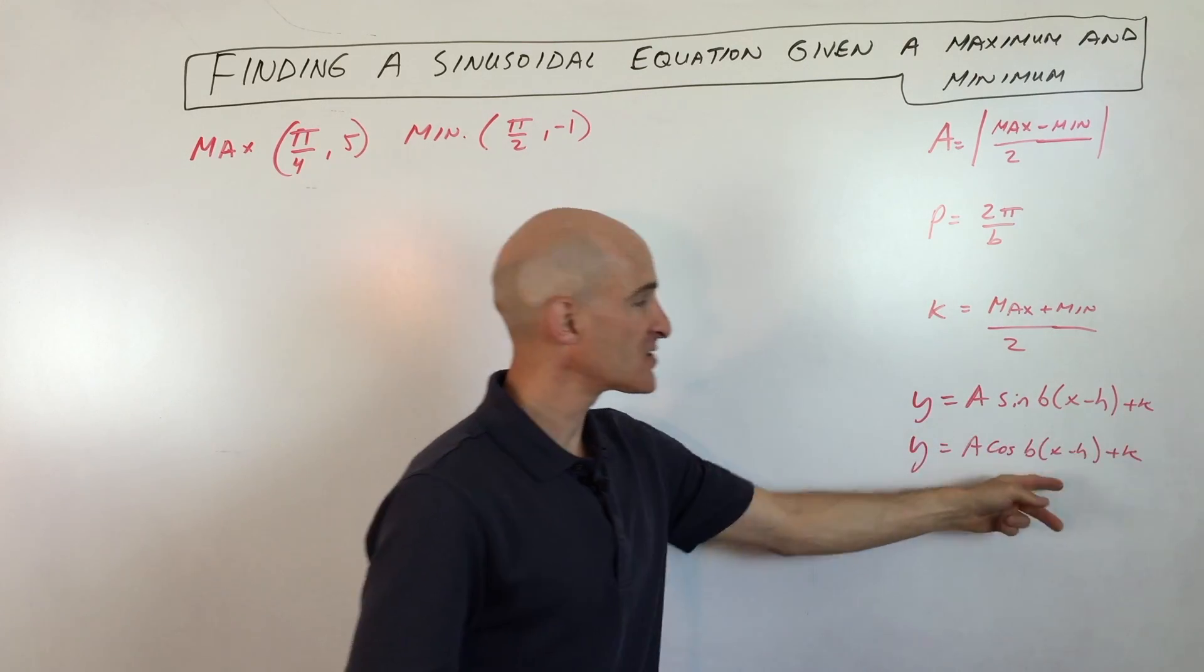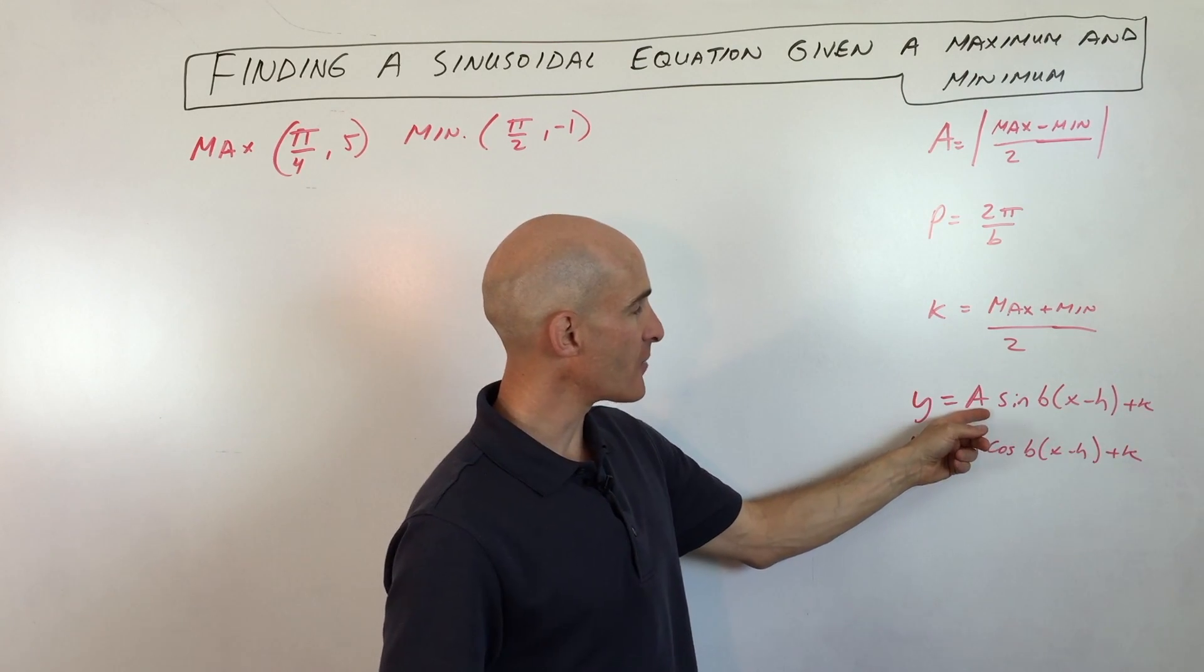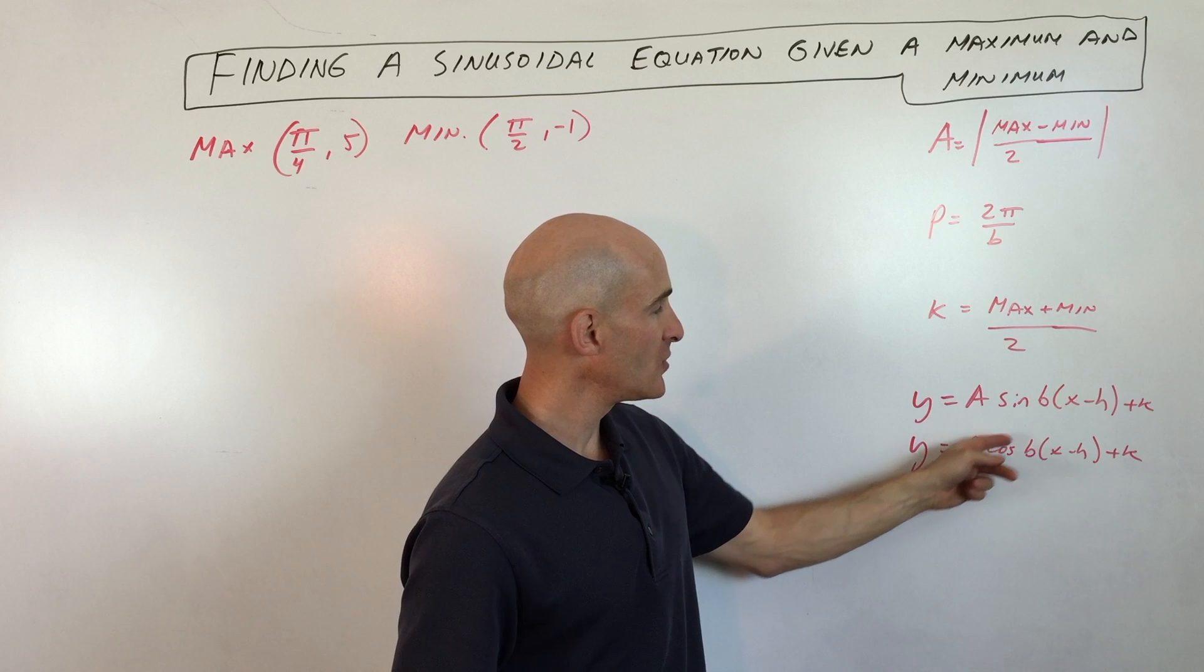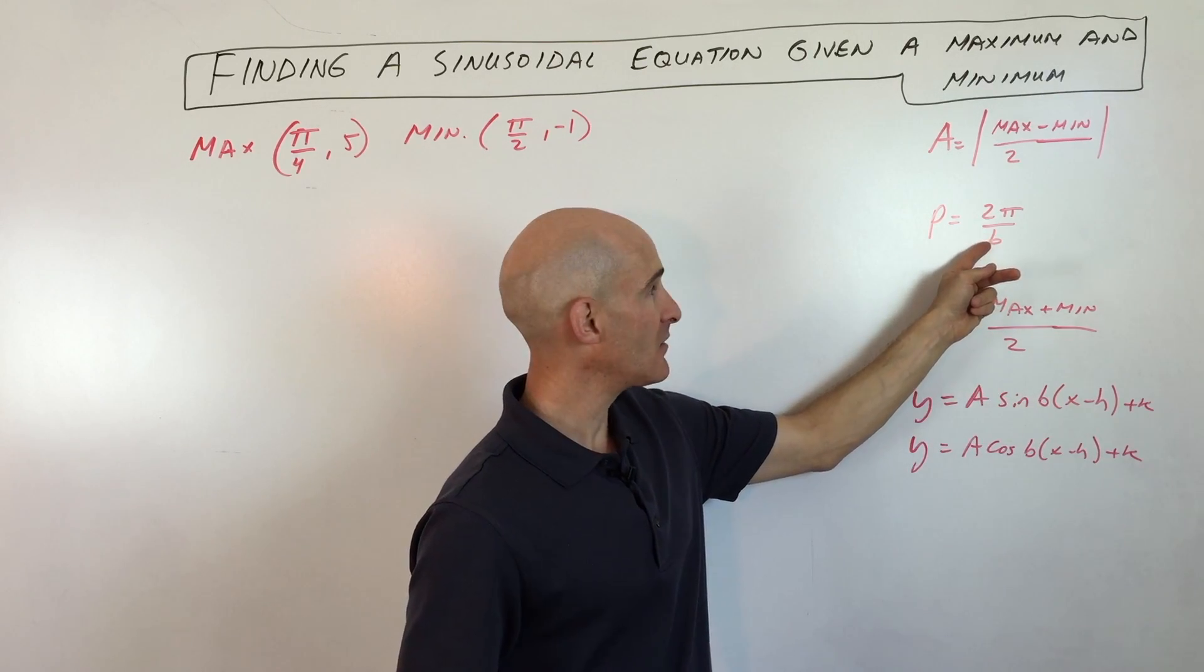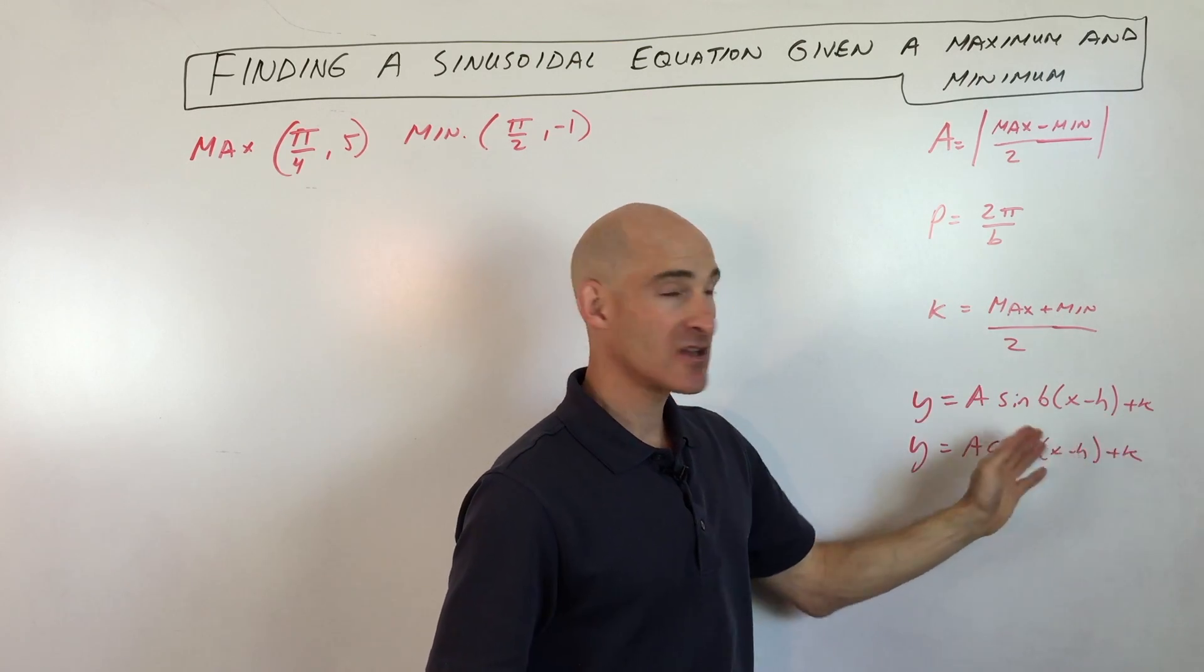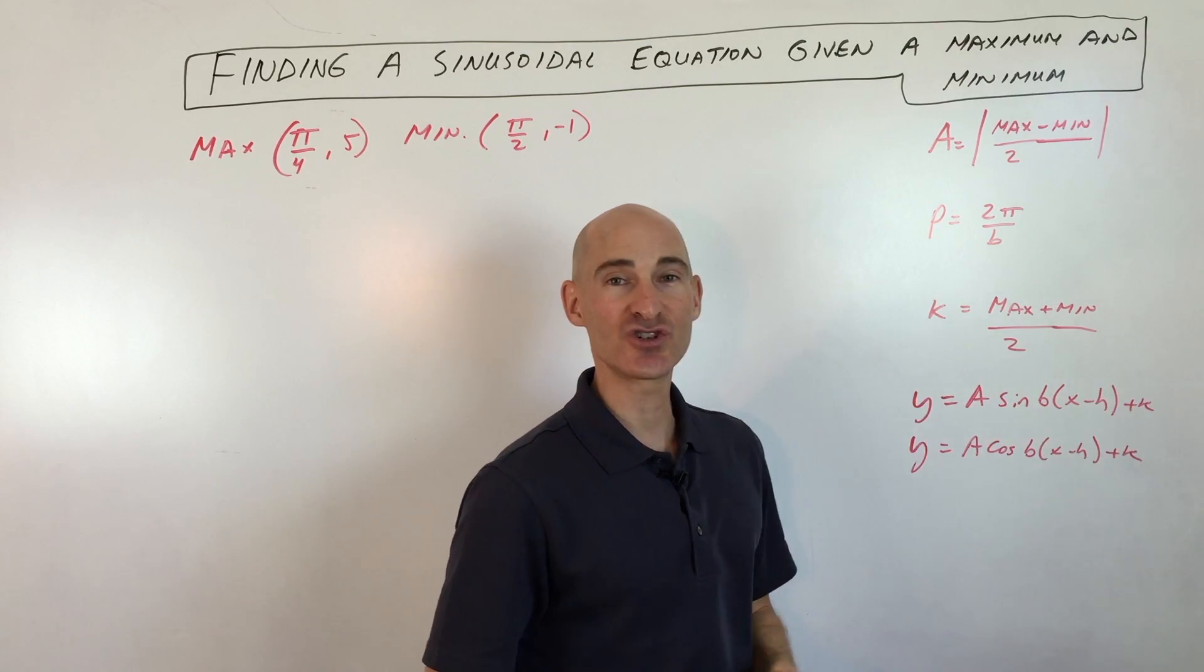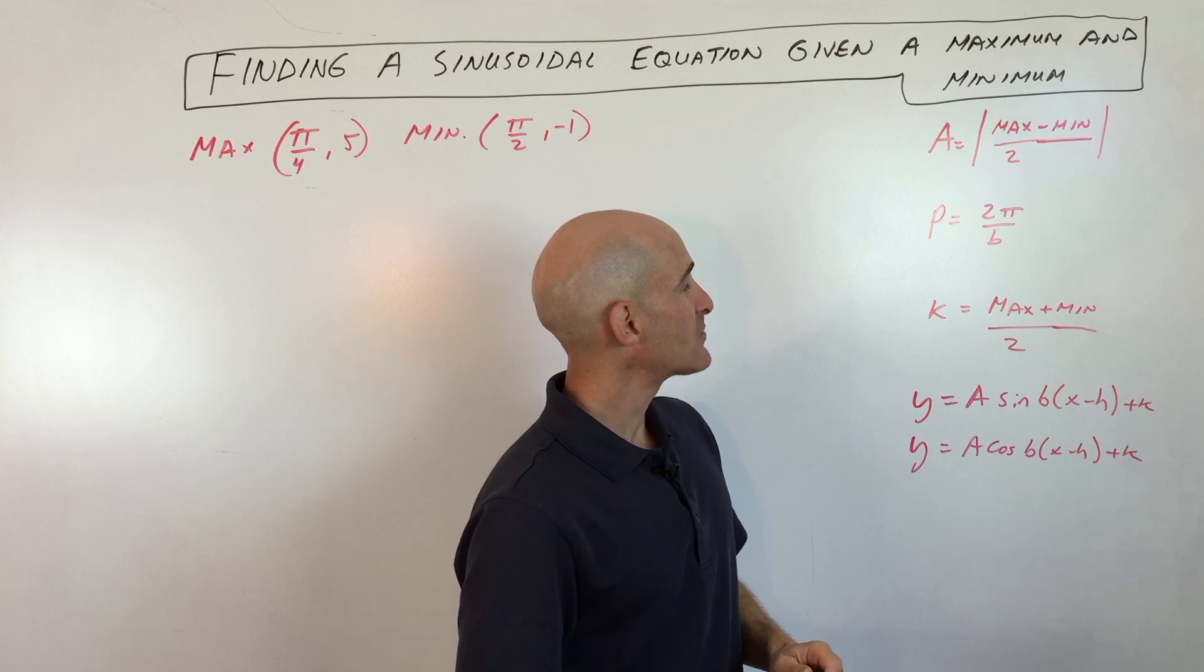The basic equation for sine and cosine, the general equation, is this one here. A, which is the amplitude. B, which is related to the period through this formula, 2 pi divided by B. Period is P. H and K. H is the horizontal shift. K is the vertical shift. And that's pretty much it.